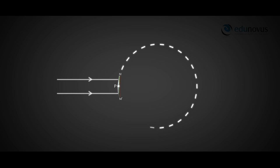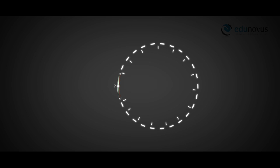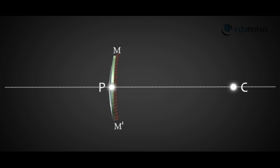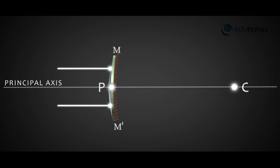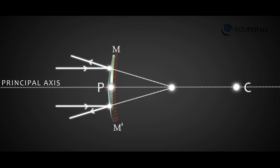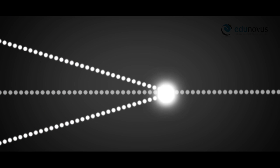The convex mirror we consider is part of a spherical shell. The center of that spherical shell is called the center of curvature, denoted by C. When you join the center of curvature C and the pole P, the straight line is called the principal axis. If incident rays on the mirror are parallel to the principal axis, after reflection they diverge outwards, but appear to come from the mirror. If you extend the reflected rays backward, they meet at a point on the principal axis called the principal focus, denoted by F.